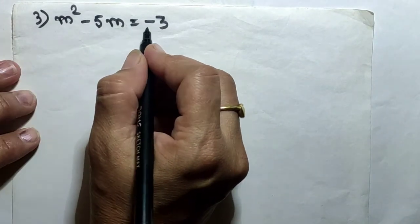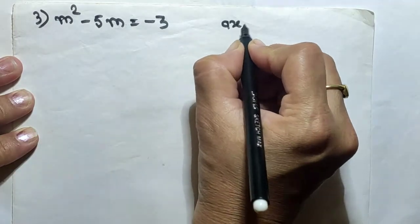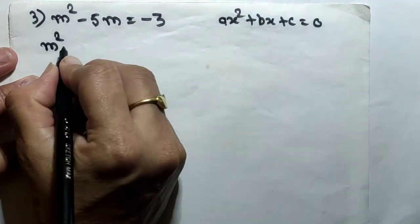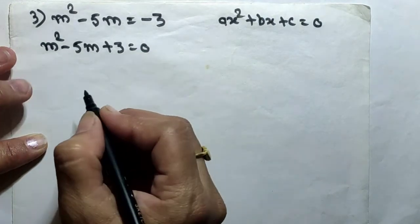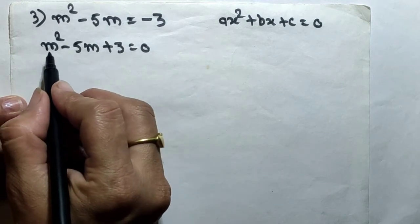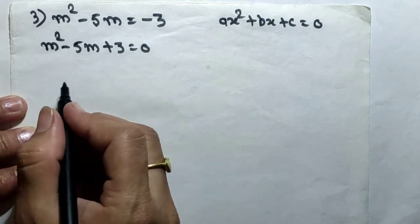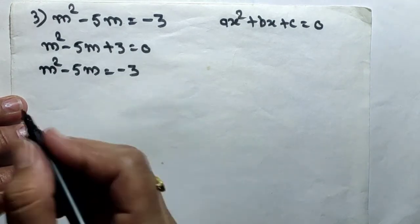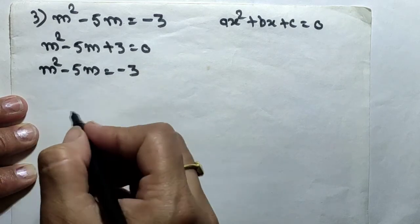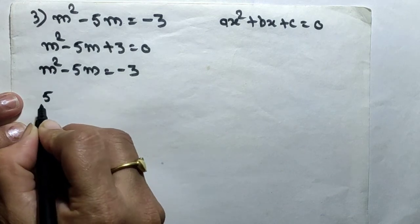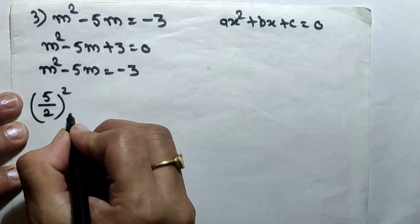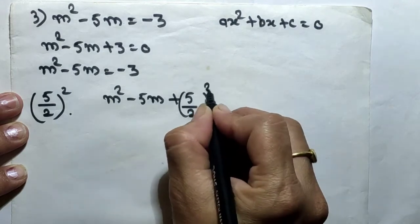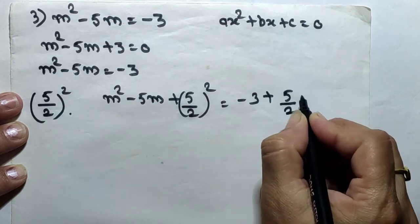Next question: m² − 5m − 3 = 0. This equation is already in the general form ax² + bx + c = 0. Step 1: the coefficient of m² is already unity. Step 2: shift the constant to the RHS — m² − 5m = 3. Step 3: the coefficient of m is 5; we divide by 2 and square it to get (5/2)², and add it to both sides: m² − 5m + (5/2)² = 3 + (5/2)².